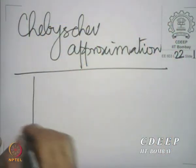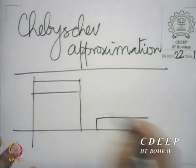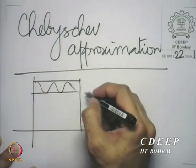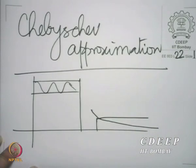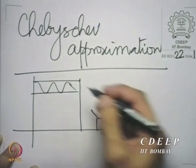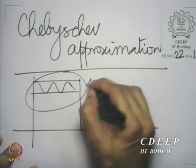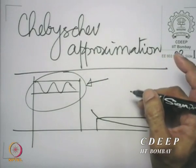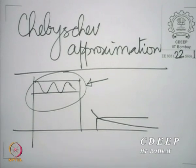What we want to do is to have an equi-ripple passband and a monotonic stopband. We expect the passband to have a magnitude something like this, and we expect the stopband to have a magnitude something like this. If you want an equi-ripple behavior in the passband, one way to get equi-ripple behavior is to use the sinusoidal function, because sinusoids oscillate in an equi-ripple manner over cycles.